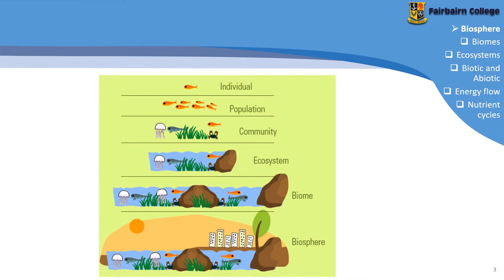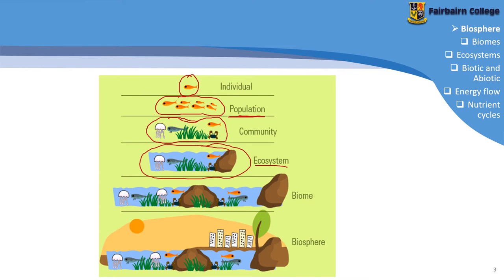More terminology from grade 8 that you should be aware of: when we look at one organism, that is just an individual. When you look at other members of that species in an area, we call that a population — for example, a population of goldfish within a pond. If you put that species together with other species in the pond, we refer to that as the community of organisms. And if you add in the non-living things like the water and the rocks, then that is the ecosystem — all of the living and non-living things in an area.